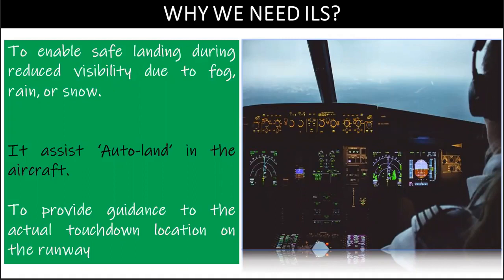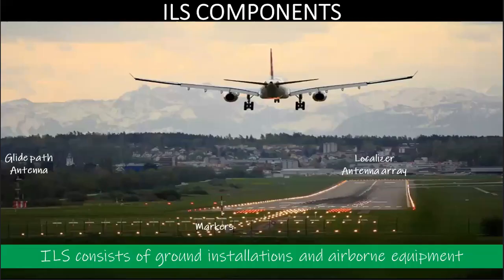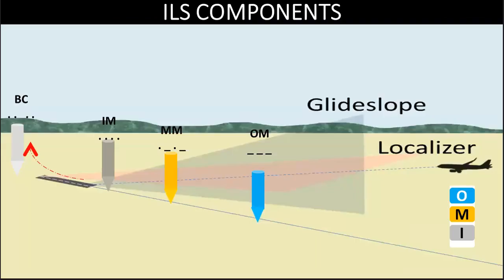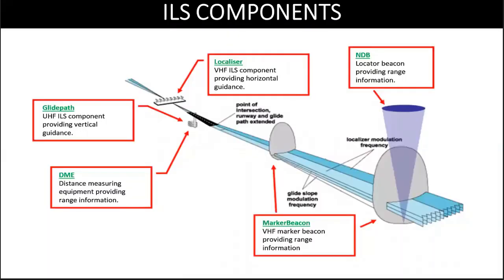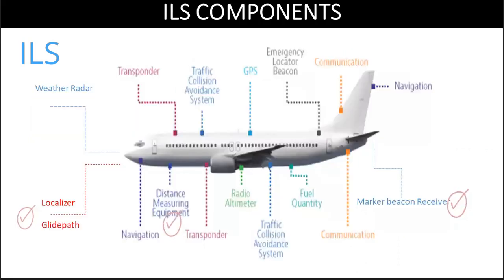It assists autoland in the aircraft, providing guidance to the actual touchdown location on the runway. ILS consists of ground installations and airborne equipment. The main components of ILS are localizer, glide path, and marker beacons. Localizer is a VHF ILS component which provides horizontal guidance to the aircraft. Glide path is a UHF ILS component which provides vertical guidance. Marker beacons are a VHF ILS component which provides range information. NDB and low power DME also provide range information. The two airborne equipments are localizer and glide path antennas located on the aircraft nose, marker beacon antennas located near the tail, and the ILS indicator display inside the cockpit.